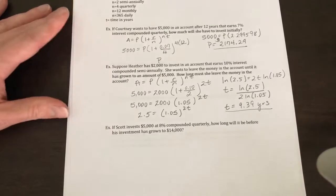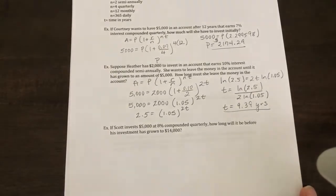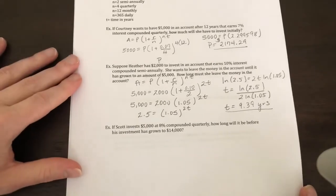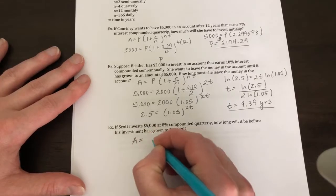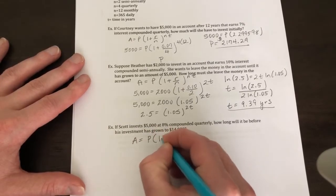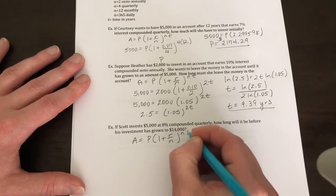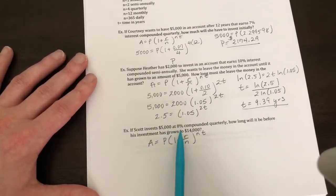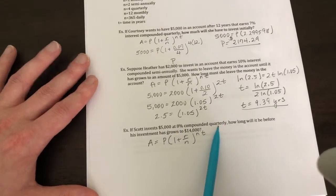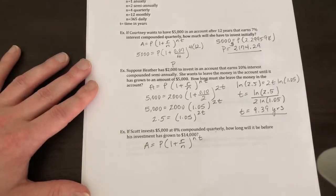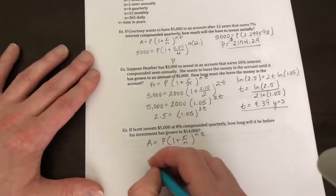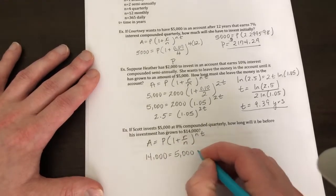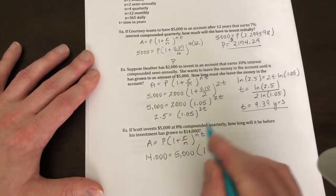Next example: if Scott invests $5,000 at 8% compounded quarterly, how long will it take before his investment has grown to $14,000? So we use our formula A = P(1 + R/N)^(NT). Your principal amount is $5,000, your interest rate is 8%, your N would be 4 because it's quarterly, and I want to know how long it will take to grow to $14,000, which is your A. So $14,000 = $5,000 × (1 + 0.08/4)^(4t).